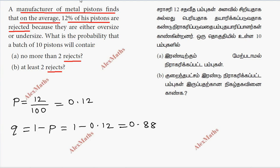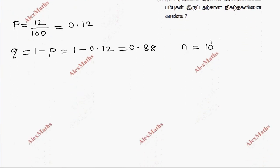In the first question below, what is the probability that a batch of 10 pistons has no more than 2 rejects? So n is equal to 10. No more than 2 rejects. That is P of x less than or equal to 2.